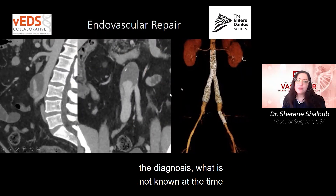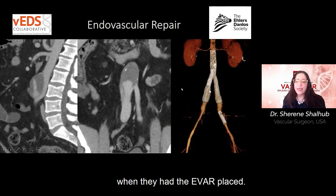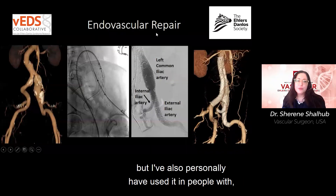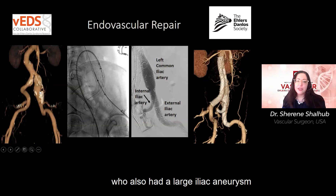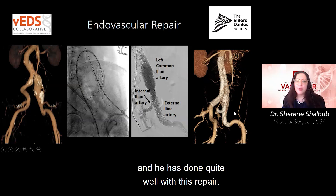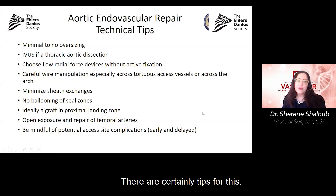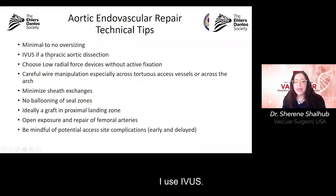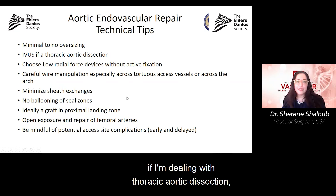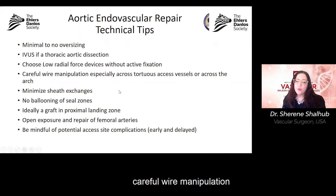This is an individual in whom the vascular EDS diagnosis was not known at the time of EVAR placement, and we are following this person. I have also personally used EVAR in a patient with a null mutation who had a large iliac aneurysm and needed a branch graft — and he has done quite well. Tips include: not oversizing the device, using IVUS for thoracic aortic dissection, choosing low radial force devices, careful wire manipulation, and no ballooning of the stent grafts.